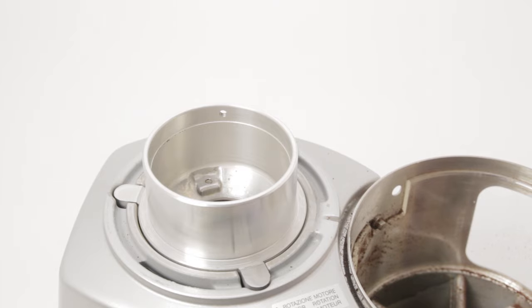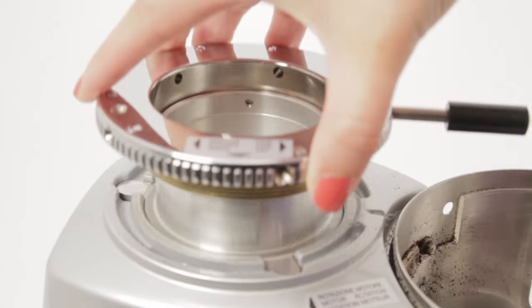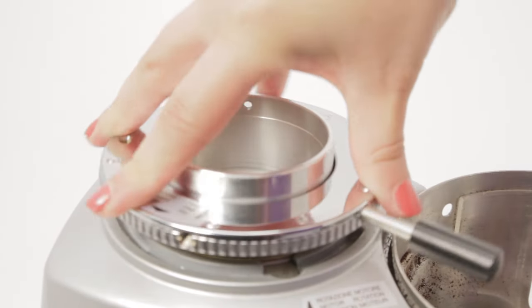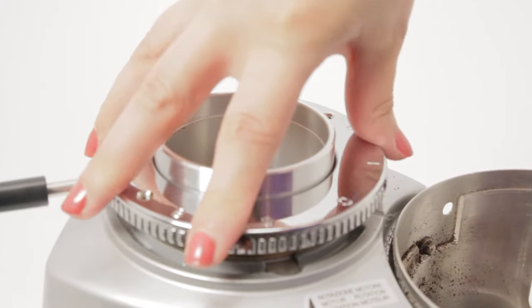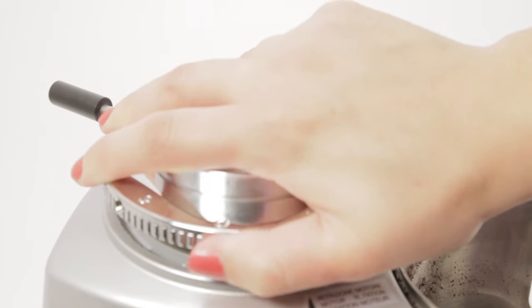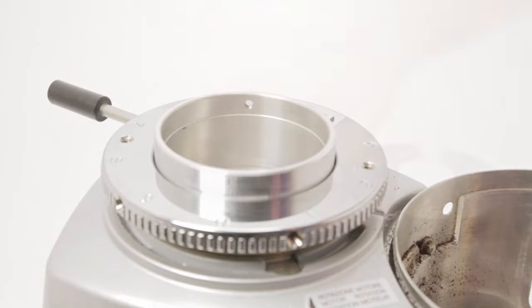Place the adjustment collar on. In order to prevent cross-threading the adjustment collar, we will turn it clockwise while pushing down until we feel and hear it drop down. This indicates the threads are in alignment.